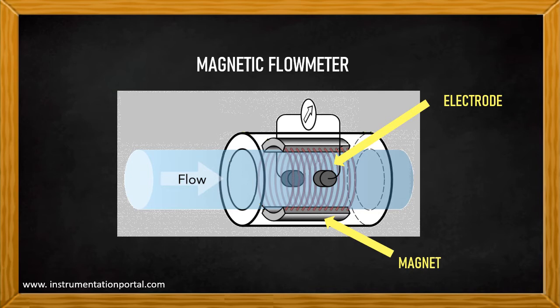The operation of a magnetic flow meter rests upon Faraday's law, which states the voltage induced across any conductor as it moves at right angles through a magnetic field is proportional to the velocity of that conductor. The fluid must be electrically conductive for the Faraday principle to apply.